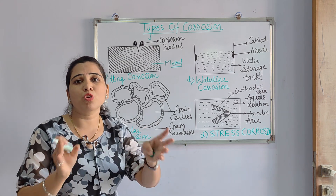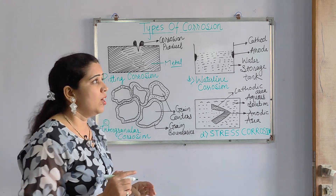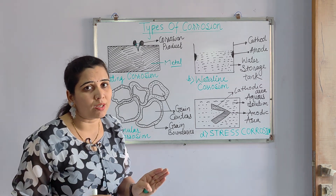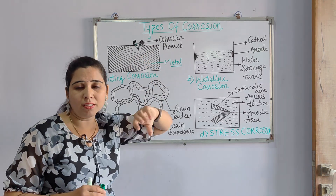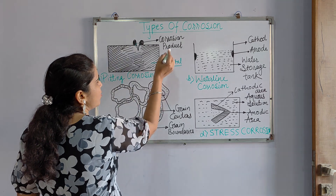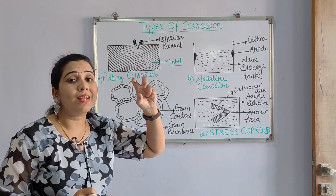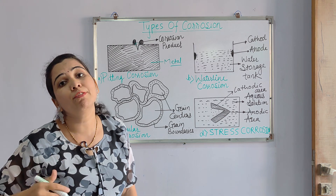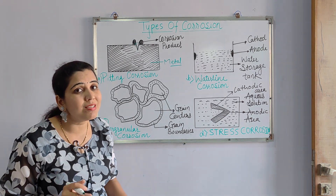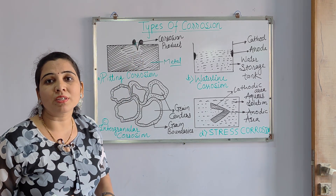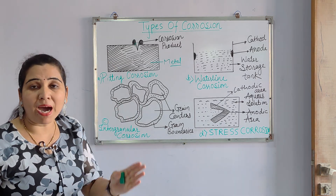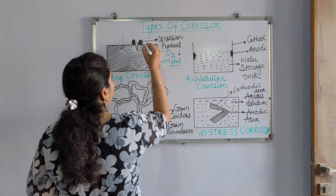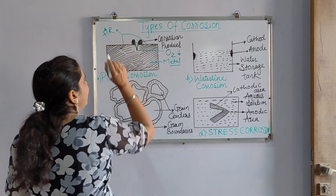When that tiny portion is exposed to the surrounding, there is formation of a concentration cell. A concentration cell means a difference in concentration of oxygen. Where that pore is found, it is totally exposed to the surrounding and is having comparatively less oxygen concentration than the other portions of the metal. This particular exposed portion is poorly oxygenated, while the remaining parts of the metal sheet are richly oxygenated — more oxygen concentration is there.